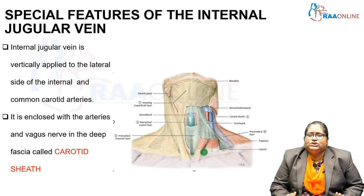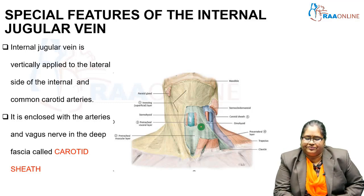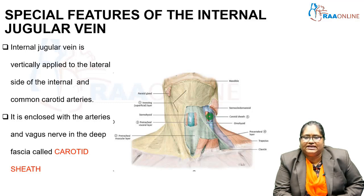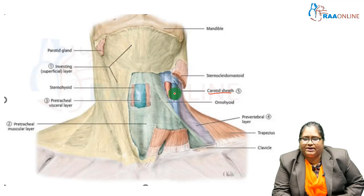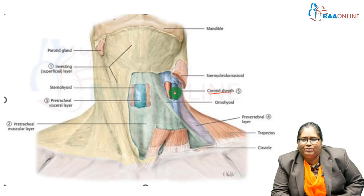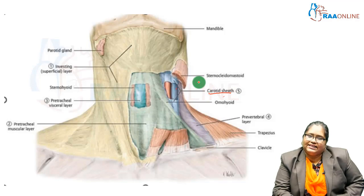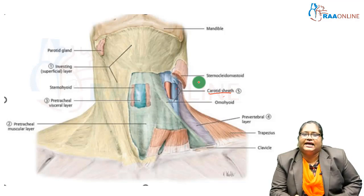Another special feature is that the internal jugular vein is vertically applied to the lateral side of the internal and common carotid arteries. The carotid artery, the internal jugular vein, and the vagus nerve running in between are all enclosed by a deep fascia known as the carotid sheath.